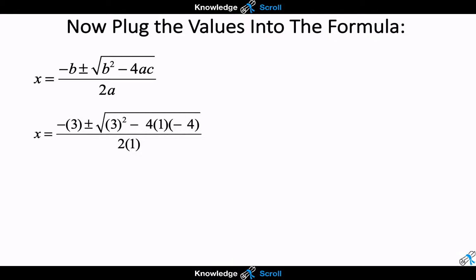Remember to solve the section under the square root first. 3 squared is 9 and negative 4 multiplied by 1 multiplied by negative 4 is positive 16. This can be further simplified, and finally x is now equal to negative 3 plus or minus 5 divided by 2.